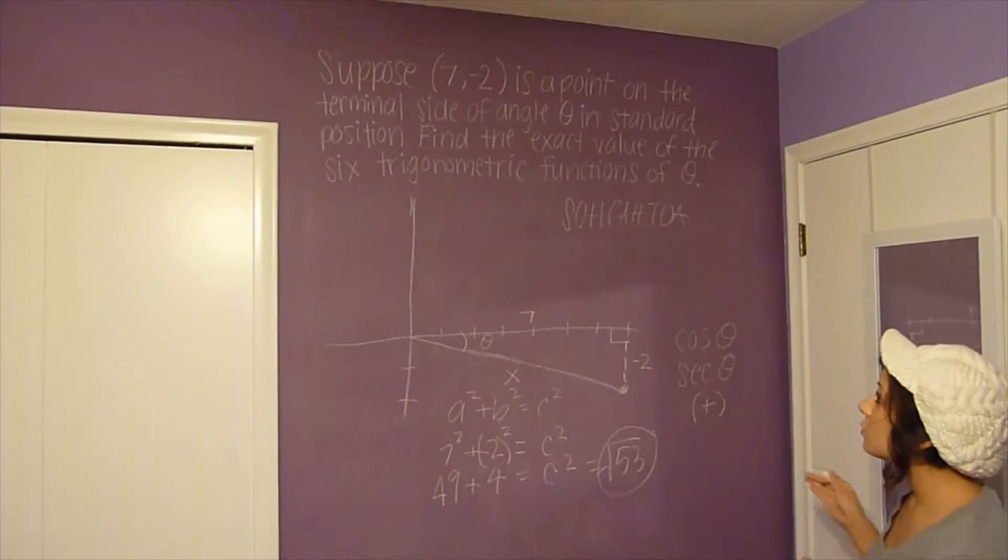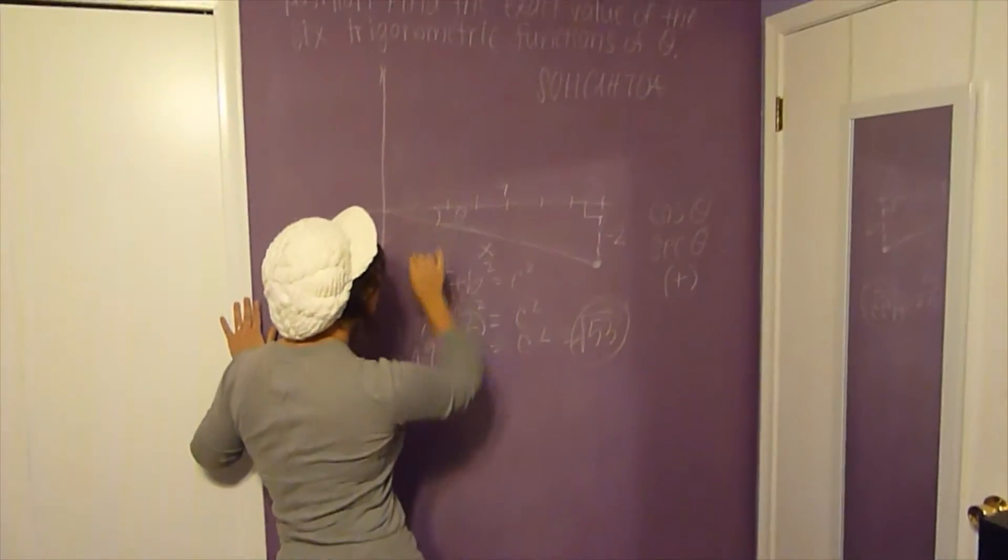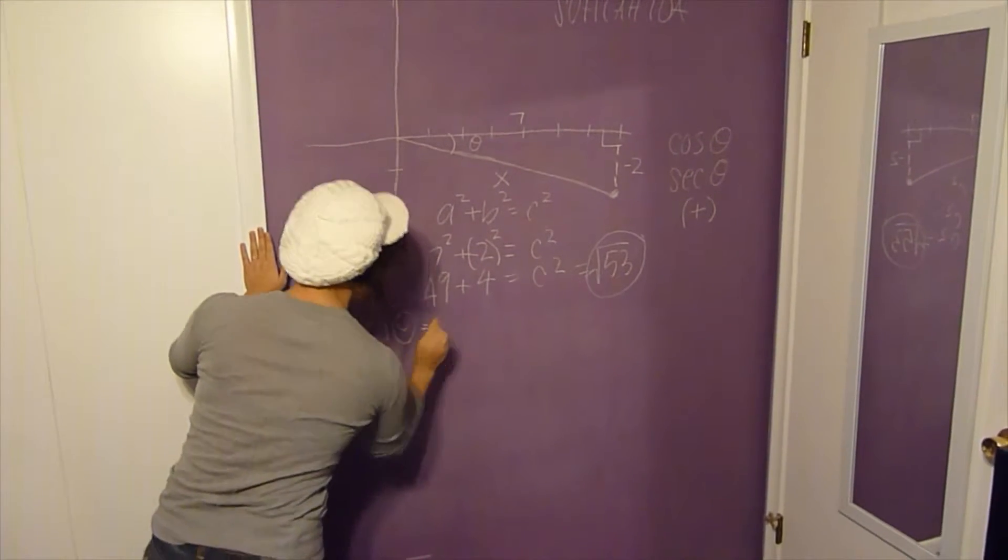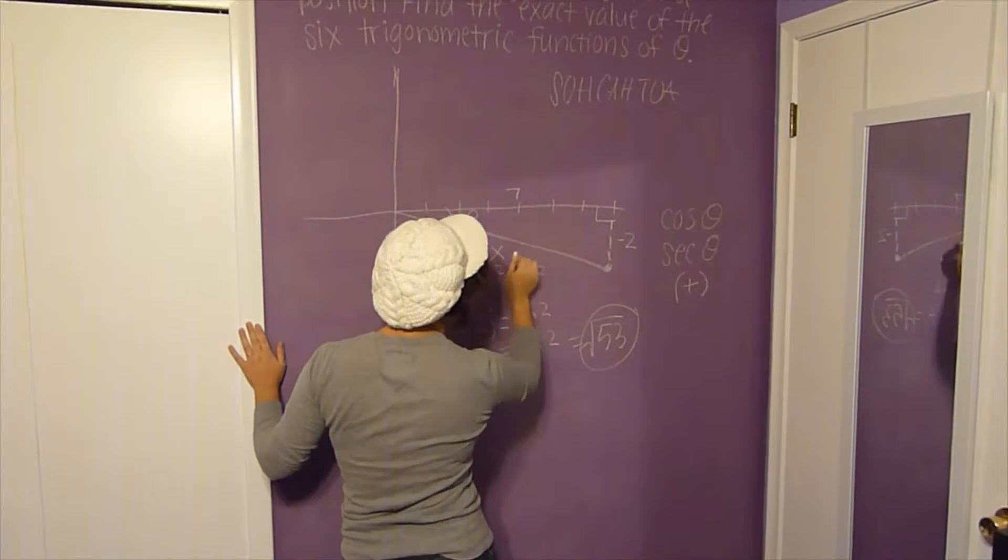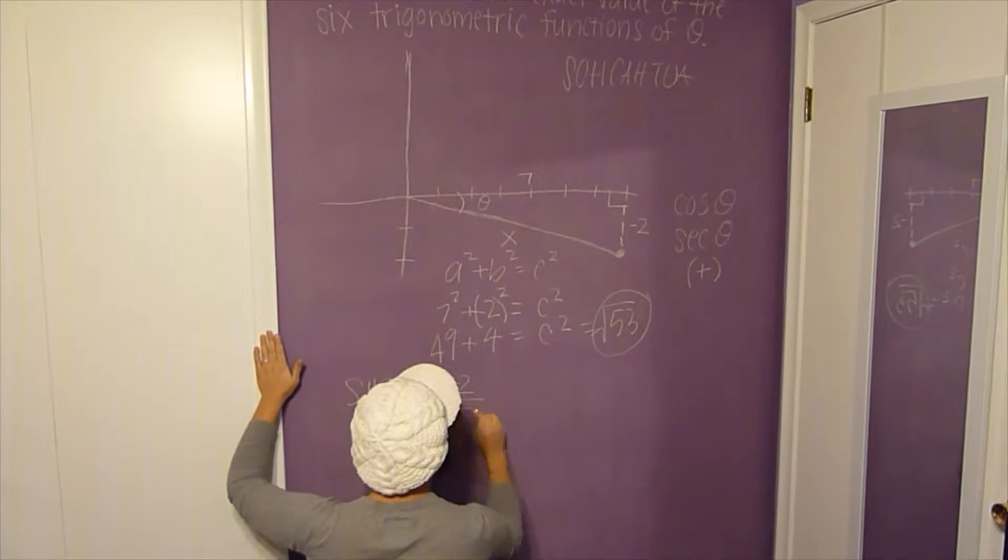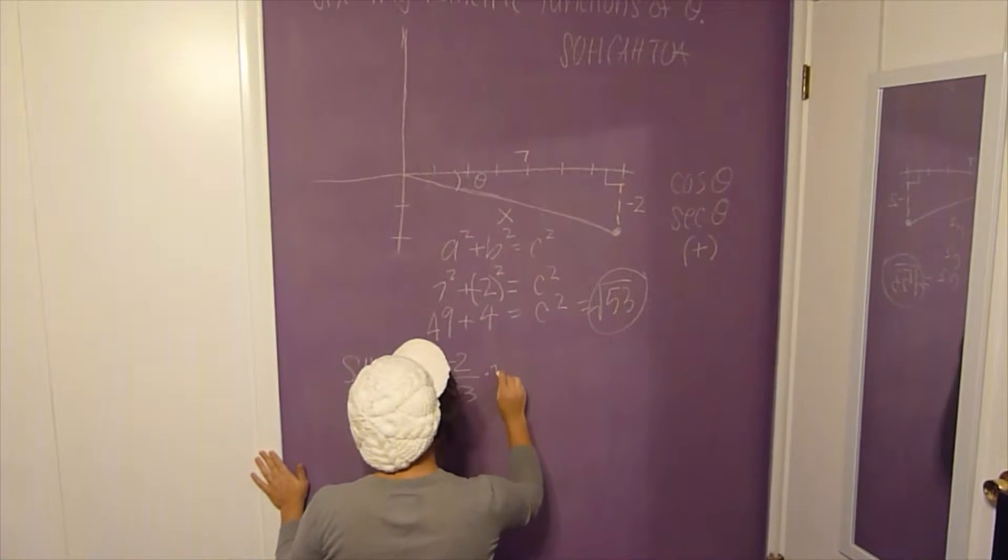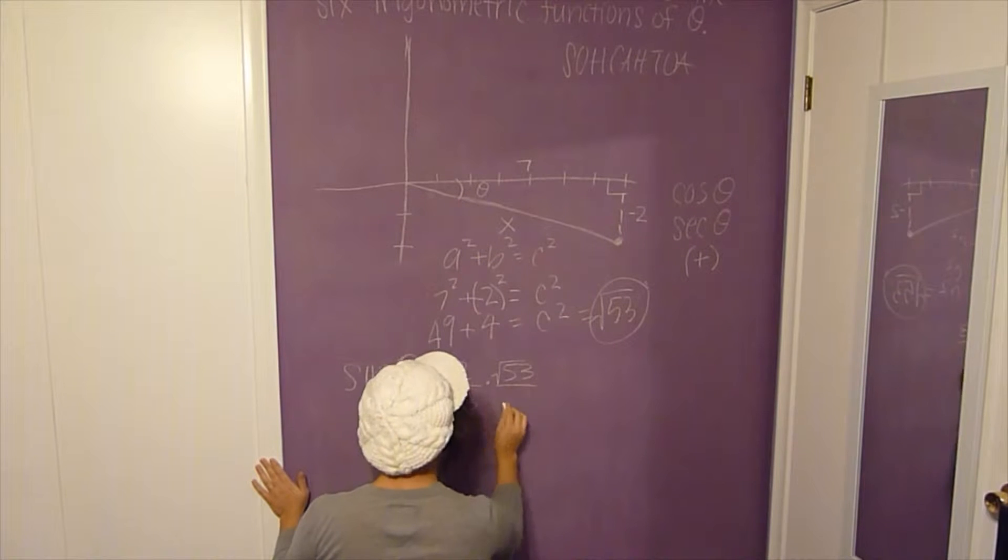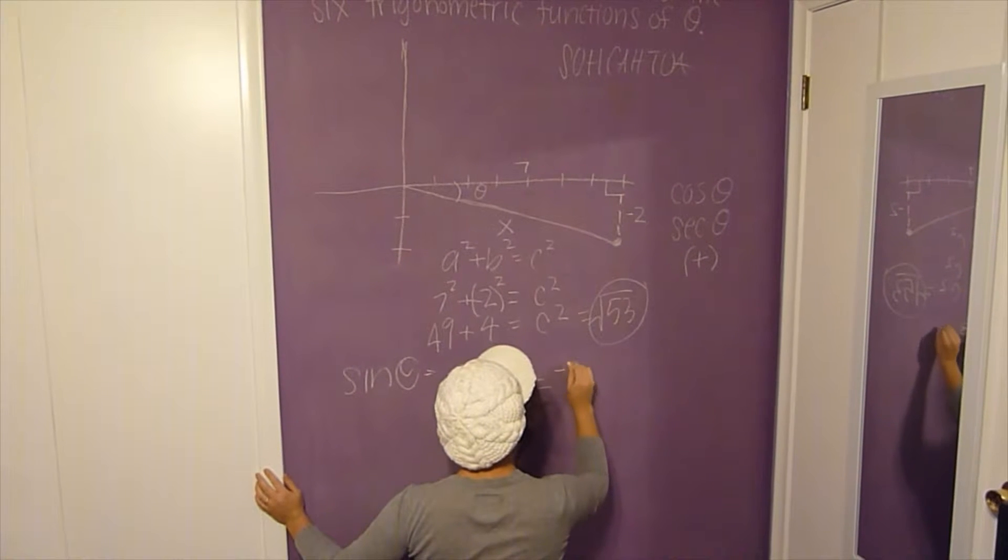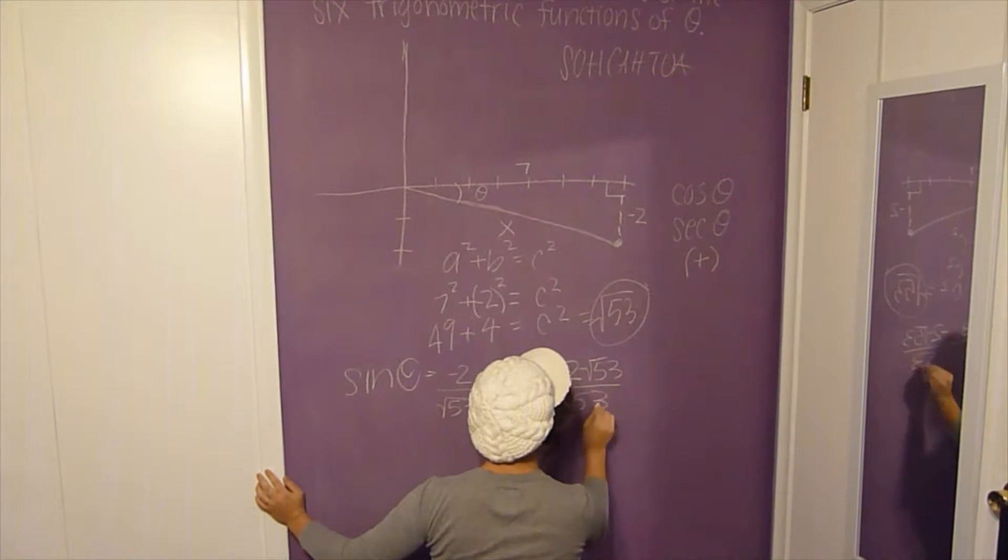So you want to find the six trigonometric function values. We're going to follow SOHCAHTOA. For sine of theta, we're going to do opposite over hypotenuse. So you have -2 over √53, but you can't have radicals on the bottom, so you're going to multiply top and bottom by √53. You get -2√53 over 53 for your sine.